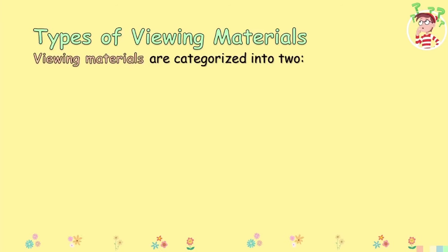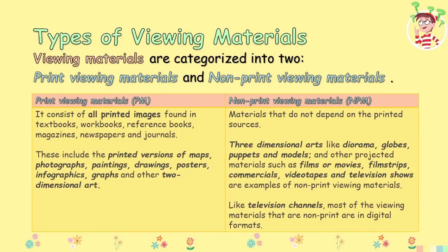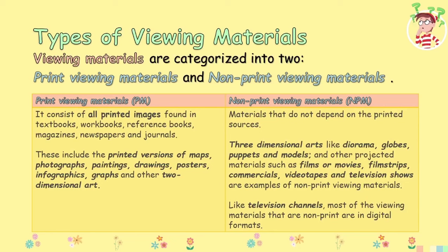There are different types of viewing materials, and they are categorized into two: print viewing materials and non-print viewing materials. Print viewing materials, or PM, are viewing materials that are printed. It consists of all printed images found in textbooks, workbooks, reference books, magazines, newspapers, and journals — everything you see that is printed on paper. This also includes printed versions of maps, pictures, paintings, drawings, posters, infographics, graphs, and other two-dimensional art — materials that exist only on paper.